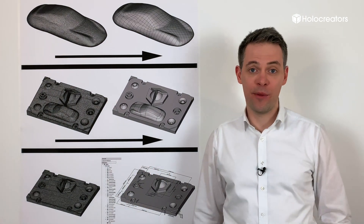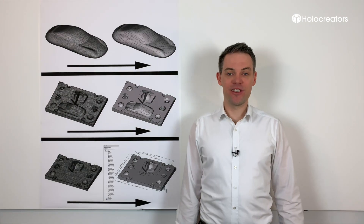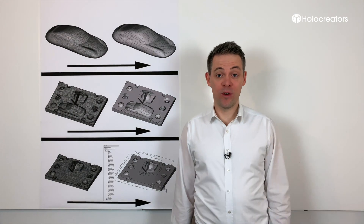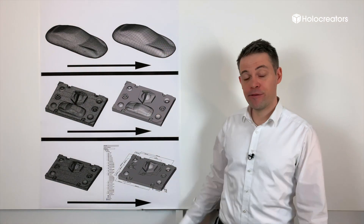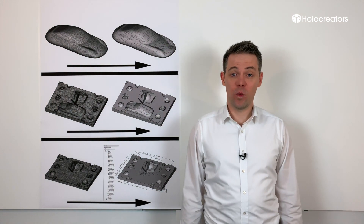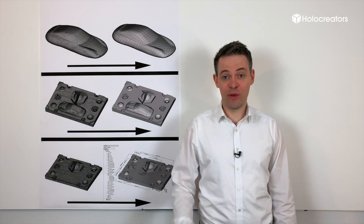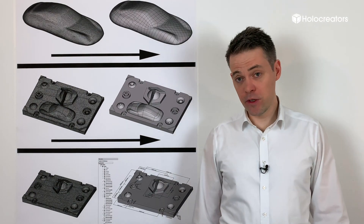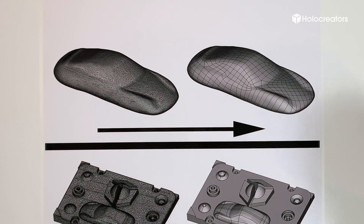For example, STL to STEP file conversion. You just need to ask yourself two questions: number one, what kind of CAD model would you like to have, and number two, in what kind of file format would you like us to provide the files? If you would like a surface model, choose reverse engineering with surface modeling.